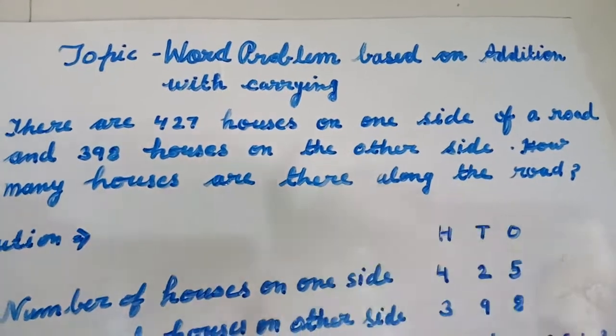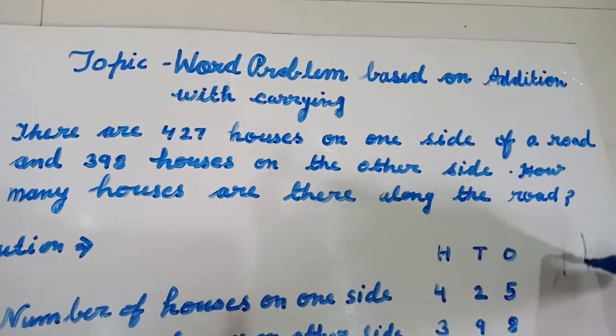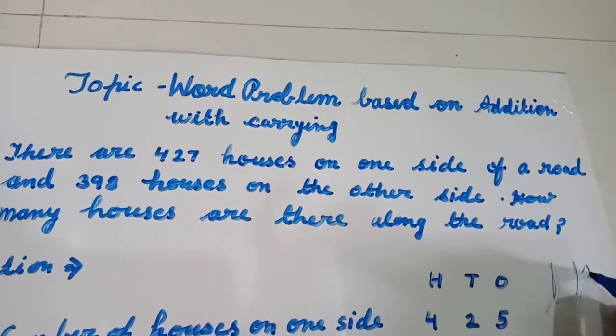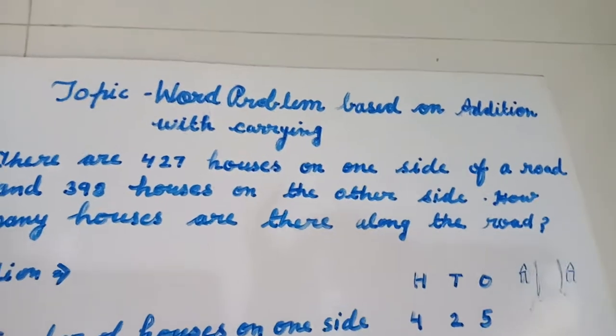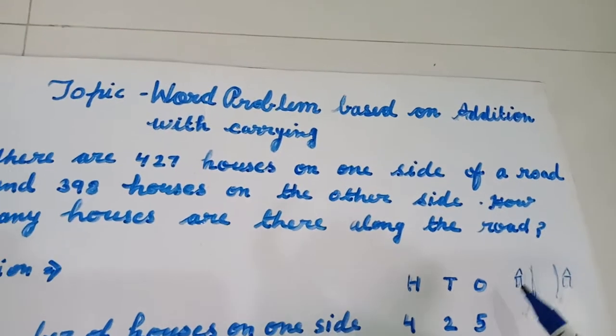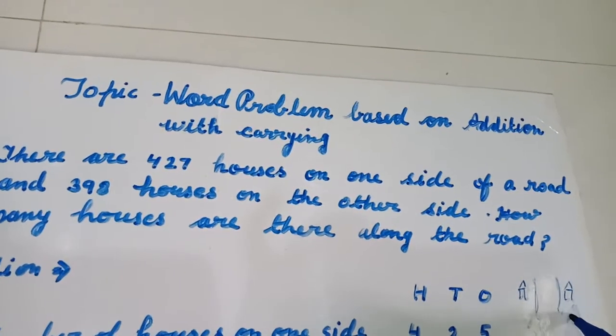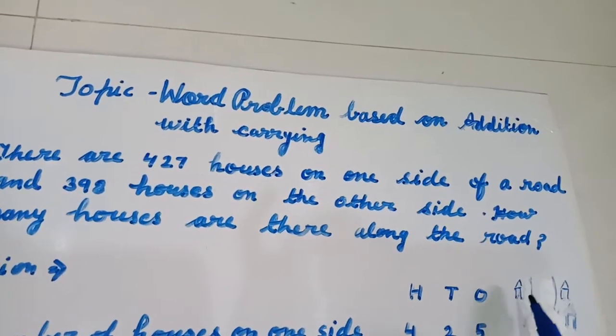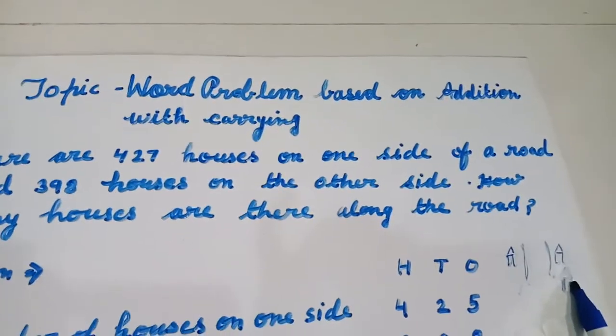یہ road ہے. اور اس طرف بھی houses ہیں. اور اس طرف بھی houses ہیں. اور ہم سے پوچھا گیا ہے کہ اس road کے ساتھ میں کتنے houses ہیں. یعنی road کے ساتھ میں تو ہمیں اس طرف کے اور اس طرف کے دونوں کے houses رہیں گے.